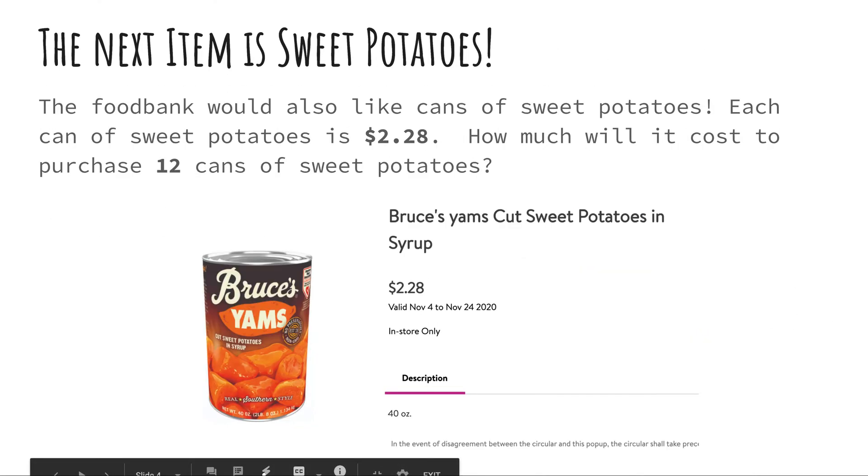Okay, let's go to the next item that the food bank is going to want to get. And with marshmallows, obviously you got to have sweet potatoes, right? So each can of sweet potatoes is $2.28. How much will it cost if you purchase 12 cans of sweet potatoes? Again, there's that key clue word. I want you to really pay attention to that, guys. It's each. So go ahead and take $2.28 times 12.